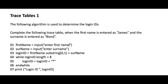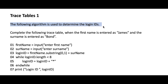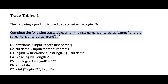Welcome back to the Mr. G Computer Science channel. Don't forget to subscribe to get the latest updates on new videos. So let's now look at the exam question: the following algorithm is used to determine a login ID. Complete the following trace table when the first name is given as James and the surname is entered as Bond.